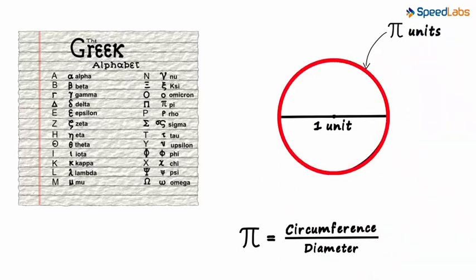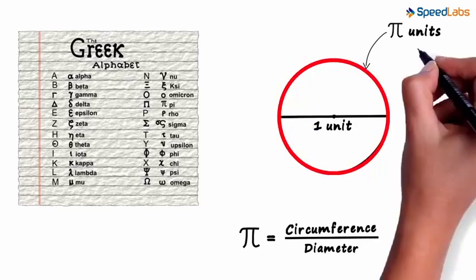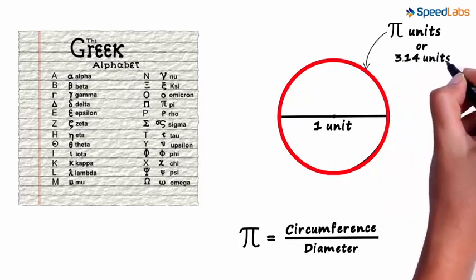If we have a circle like this, with diameter equal to one unit, then the length of this boundary will be pi or approximately 3.14 units.